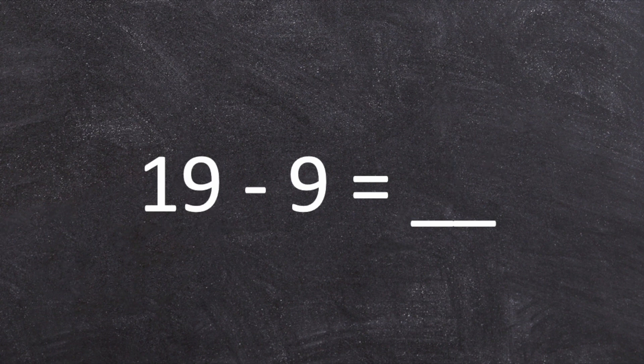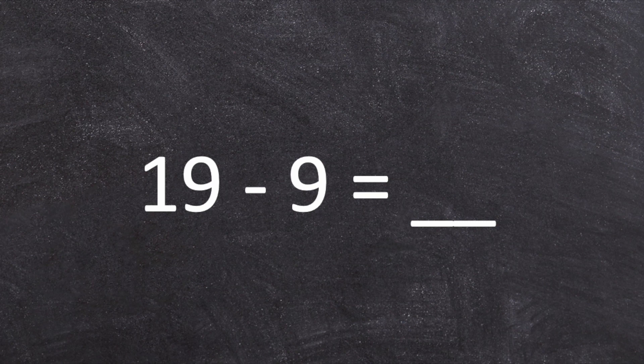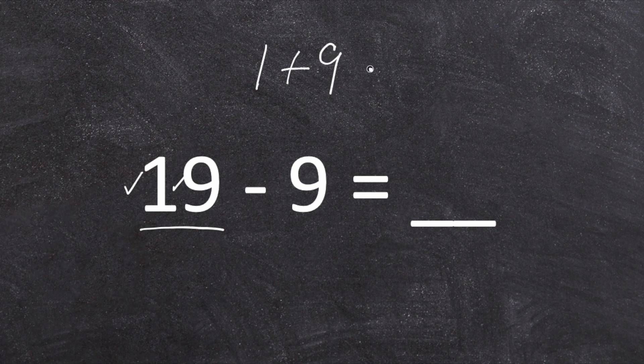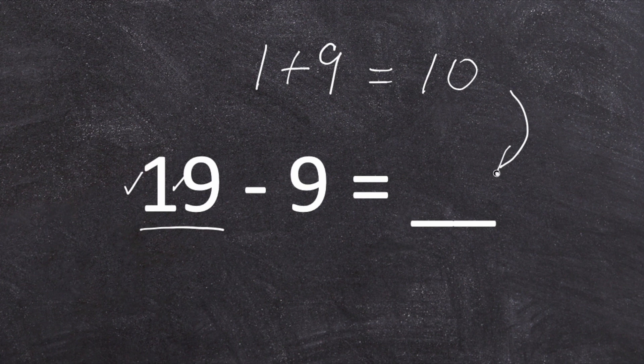Let's try this again with another one. Nineteen minus nine equals blank. Again, look at our minuend. It's made up of two digits, one and nine. When we add those together, one plus nine gives us ten.